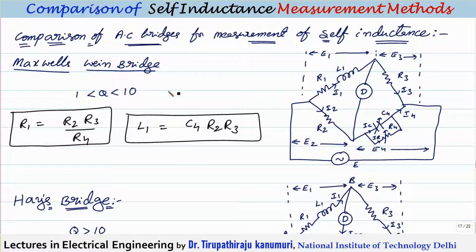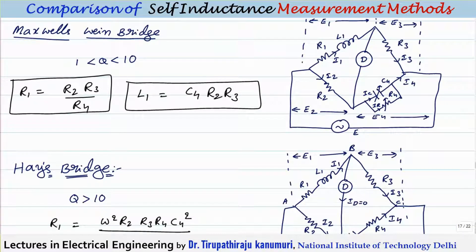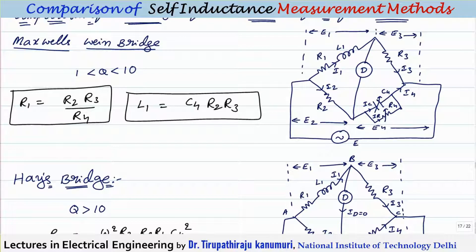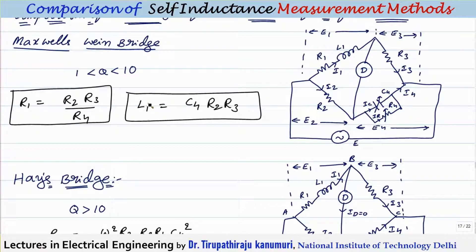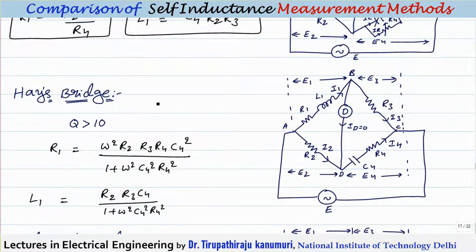The different types of bridges used are: Maxwell's bridge, followed by Maxwell's Wien bridge — also called Maxwell's inductance capacitance bridge — which is used for measurement of inductance in terms of capacitance and resistance. A variable capacitor and resistor are used, and this is suited for Q values between 1 to 10. The next type is the Hays bridge.